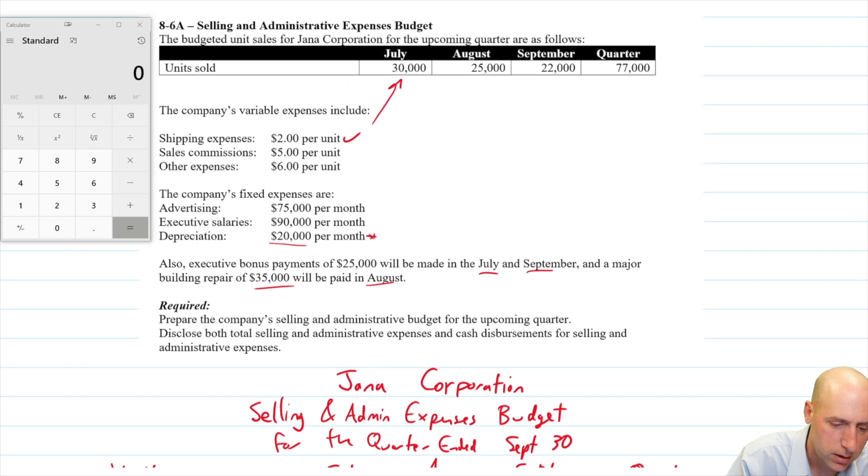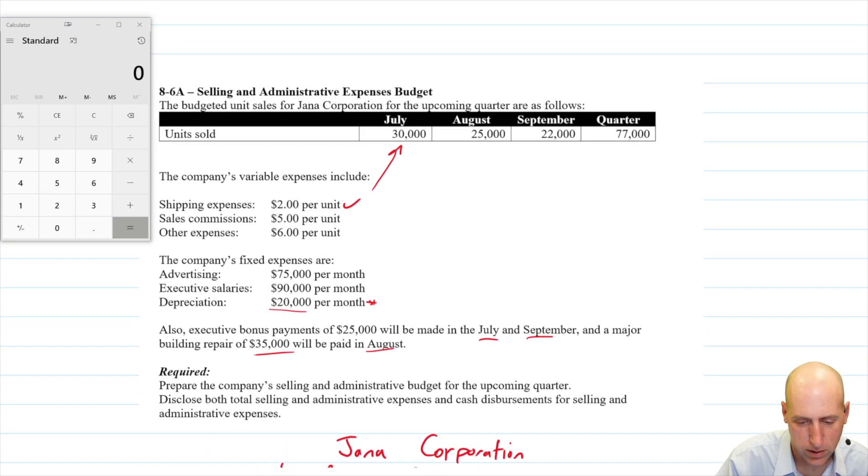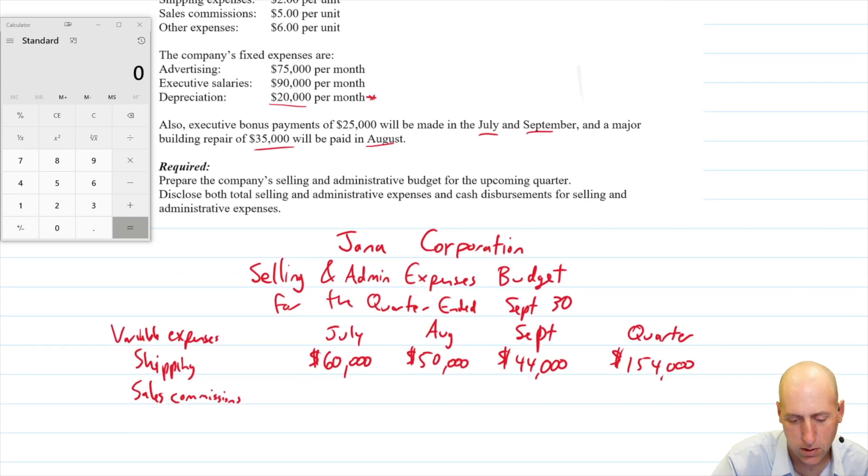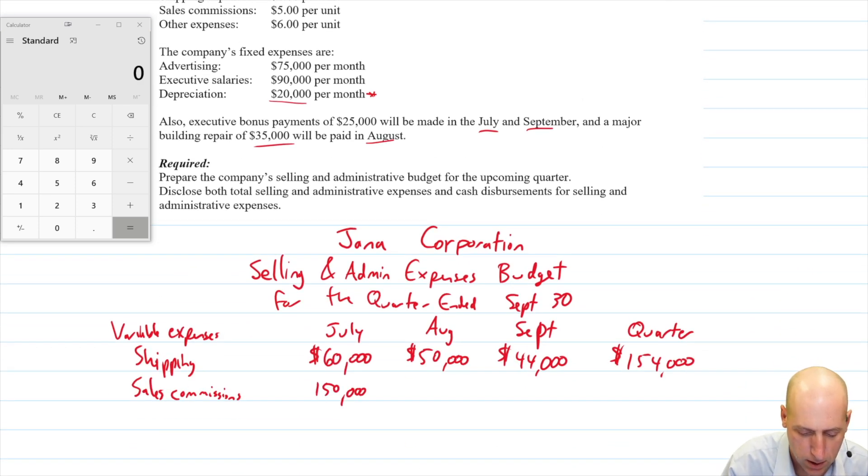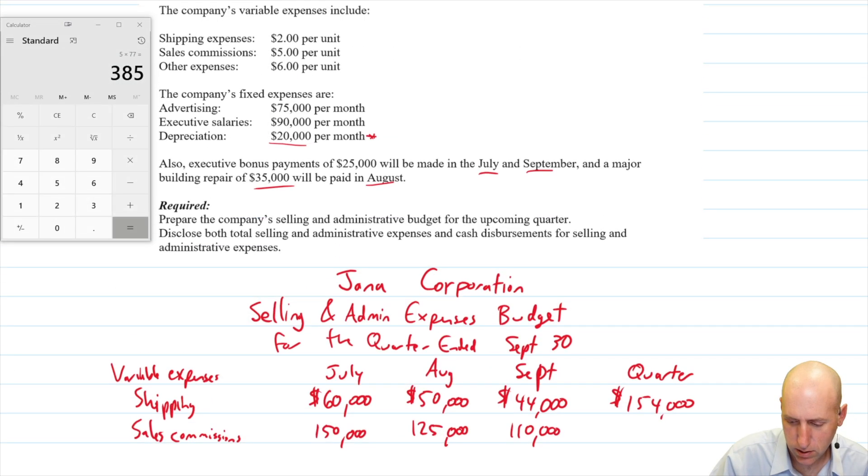Next is variable sales commissions. And our sales commissions were $5 a unit. So again, we're just going to go 5 times 30, 5 times 25, and 5 times 22. 5 times 30, 150. 5 times 25, 125. 5 times 22, 110. Wow, I'm doing this in my head. I hope I'm right. Yeah, 5 times 22. So in total, I'm not going to be able to do this. 5 times 77 is 385.